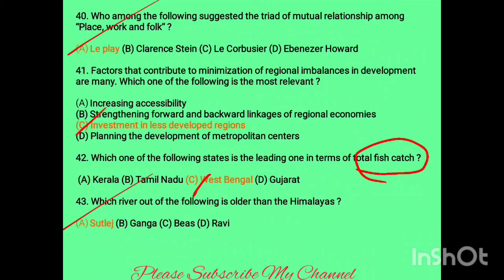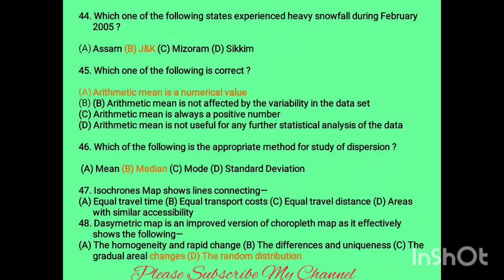Question forty-three: which river is older than the Himalayas? The answer is the Sutlej. Question forty-four: which state experienced heavy snowfall during February 2005? The answer is Jammu and Kashmir. Question forty-five: which statement about arithmetic mean is correct? Arithmetic mean is the numerical value — option A is correct. Arithmetic mean can be negative and is useful for statistical analysis.